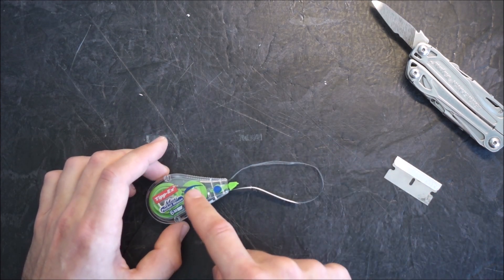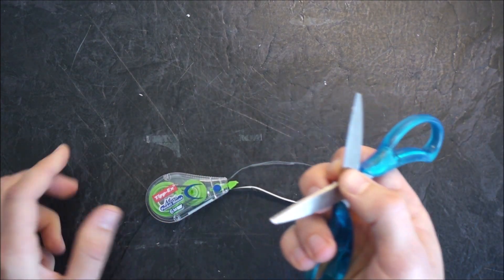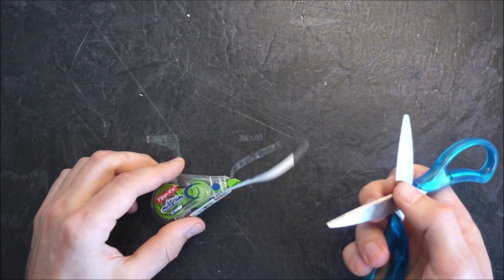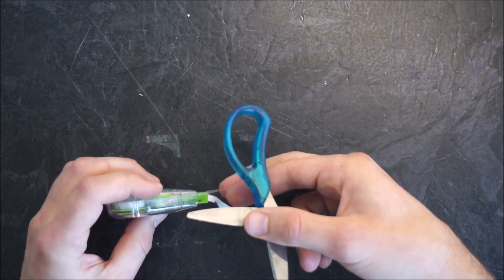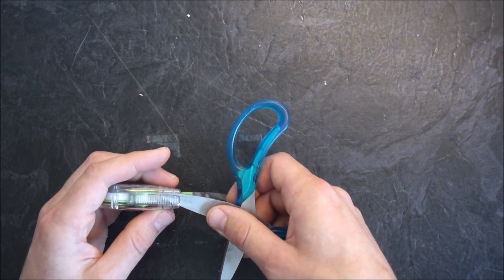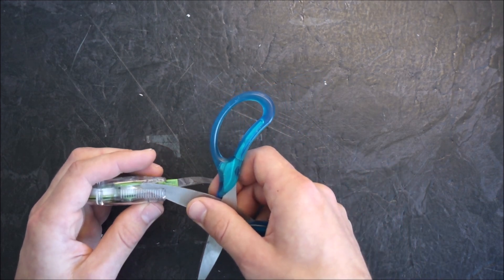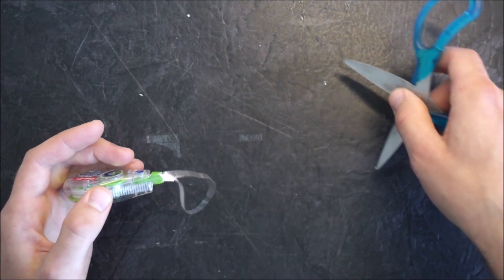So the alternative is to open this up. A good way to open this is by taking a pair of scissors and sticking it in the top, right in here, and then prying open. As long as you don't cut the tape again, you should be able to get one end open.